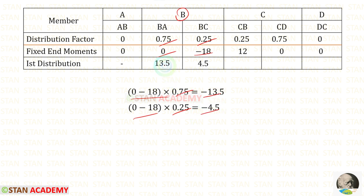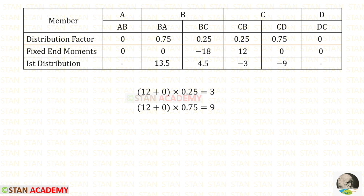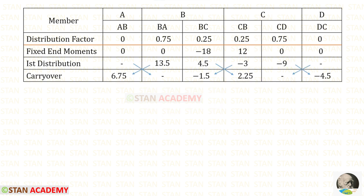Now let us do the first distribution in joint C. We add the two fixed-end moments and multiply with the distribution factors. We are getting positive values, so we enter them as negative. Now let us do the carryover by dividing these values by 2 and entering the answers.